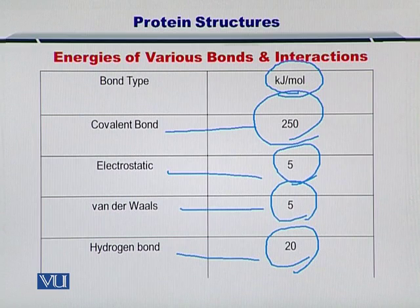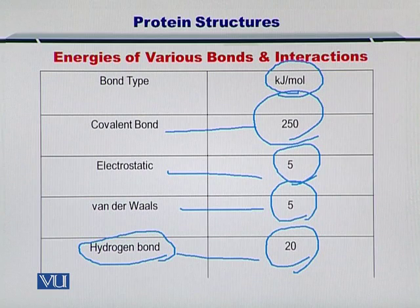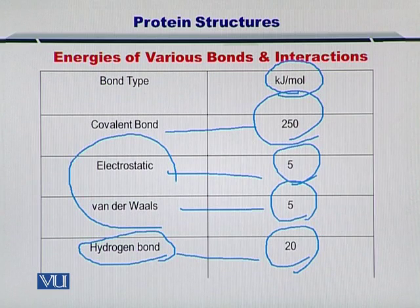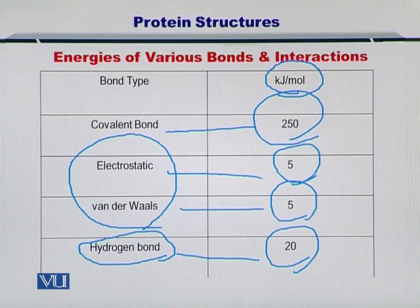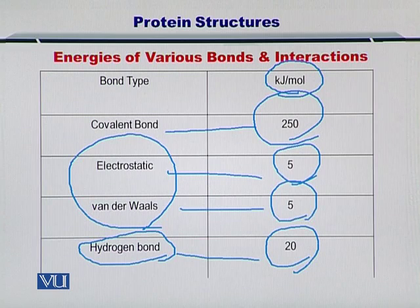Once all the possible covalent bonds are formed, it will try to create as many hydrogen bonds as possible. This will be followed by any possibilities for electrostatic interactions and van der Waals forces. Once the entire protein structure is formed, it falls to the most stable structure with the lowest energy possible.